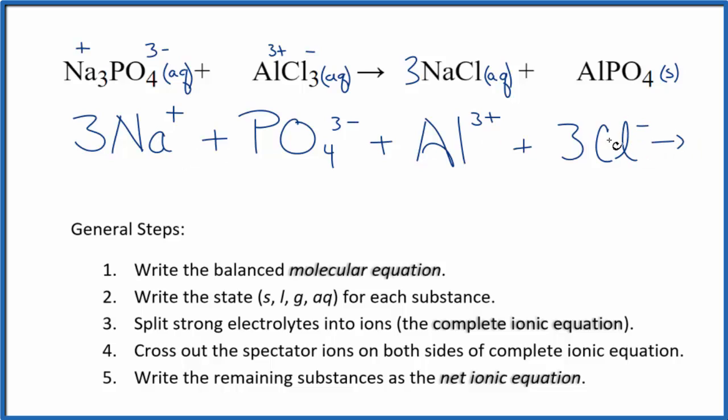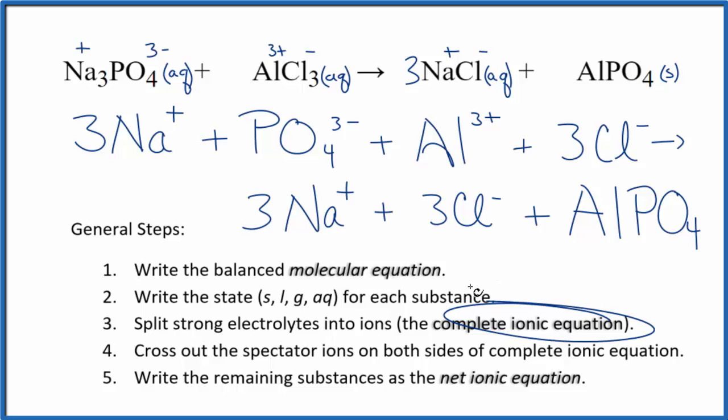For the products we have the plus and the minus here, so three sodium ions and three chloride ions, just like the reactants. Plus, in net ionic equations we don't split solids apart, so we have the aluminum phosphate, that's just going to stay AlPO4. So this is what we call the complete ionic equation.